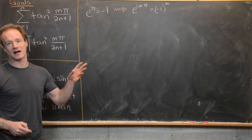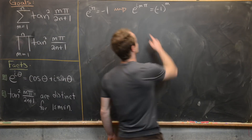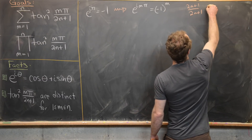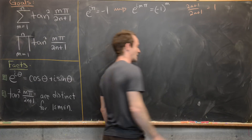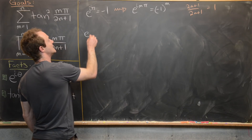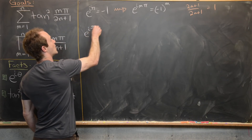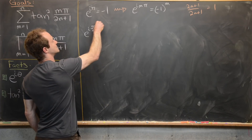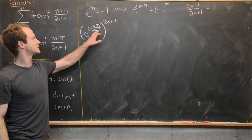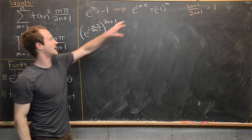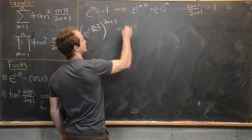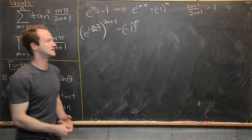Next, I'll exponentiate both sides to the first power, but on the left-hand side by 2n plus 1 over 2n plus 1, and on the right-hand side just by 1. That turns the left-hand side into e to the i m over 2n plus 1 times pi, all raised to the 2n plus 1 power. The 2n plus 1 factors cancel, leaving the original left-hand side, while the right-hand side remains minus 1 to the m.